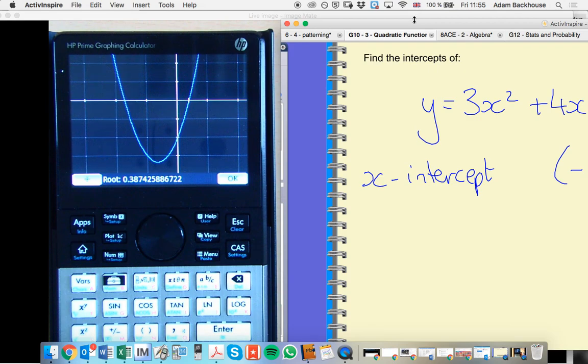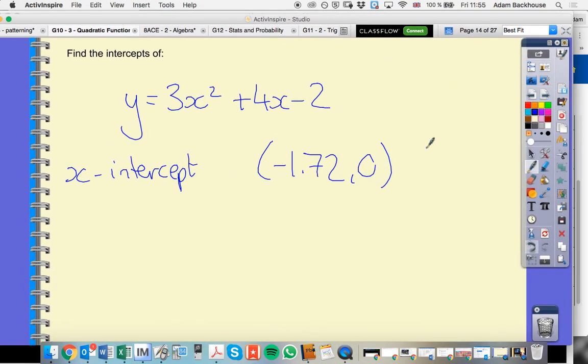So those fall within what I was expecting, the range which I was expecting. Let's write this down as coordinates. 0.387, 0.